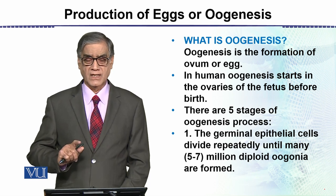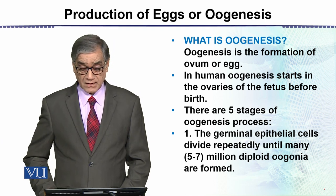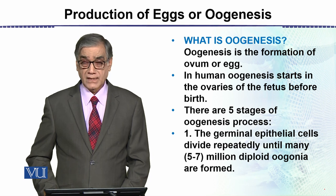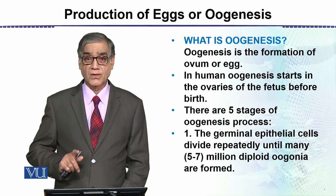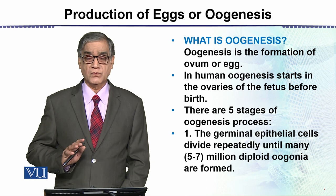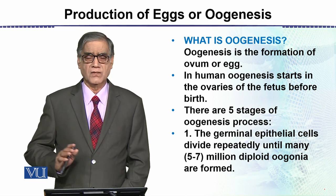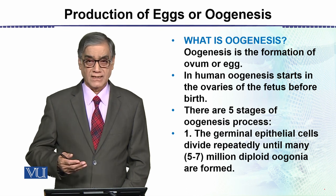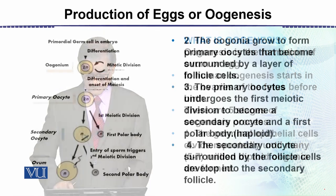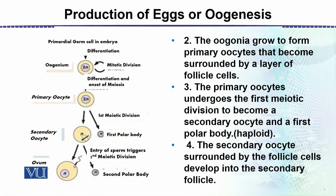The first step is that the germinal epithelium cells divide repeatedly until many — five to seven million — diploid oogonia are formed. There are a large number of cells whose program is set for egg formation. The second step is that the oogonia grow to form primary oocytes that become surrounded by a layer of follicle cells. As the egg starts to form, it becomes surrounded by cells which we call the follicle cells.